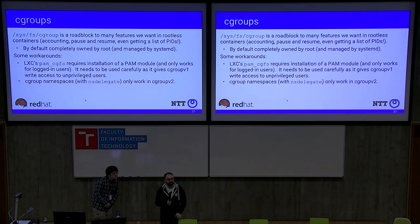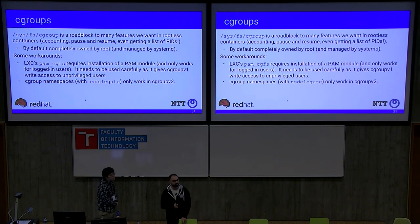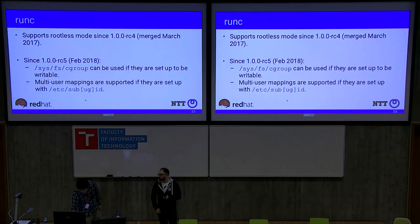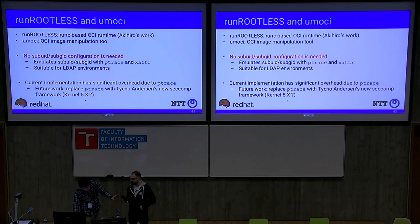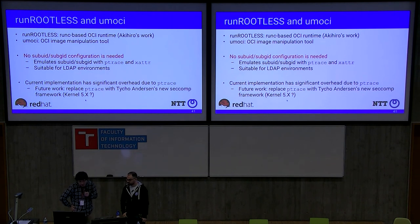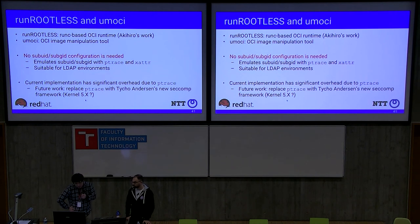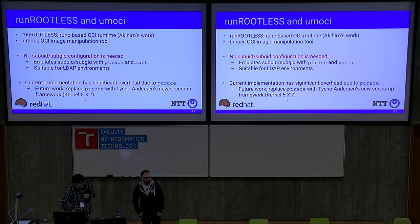Question: is there any new work happening in the kernel space for rootless containers? One of the interesting things is that the new seccomp user notification framework can replace ptrace, which is very useful for rootless containers — with it we don't need sub-UID and sub-GID configuration, making it very useful for LDAP environments. Also, overlay filesystem may at some point become usable by rootless users.